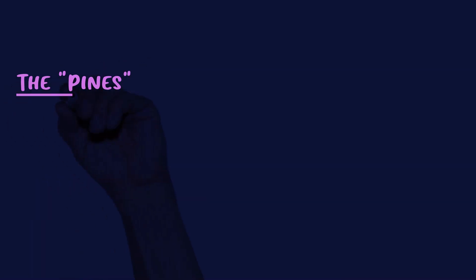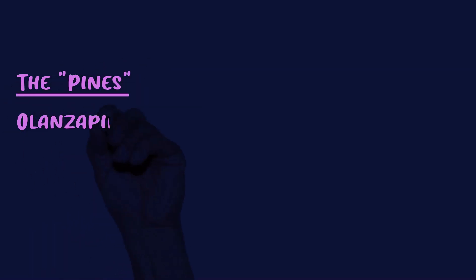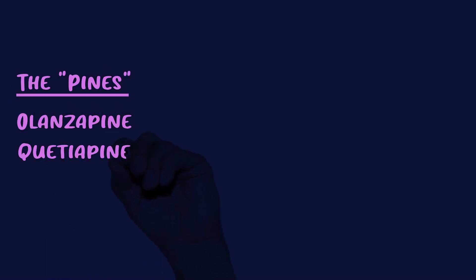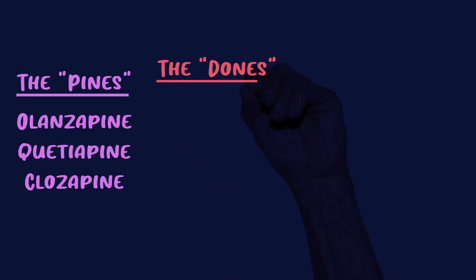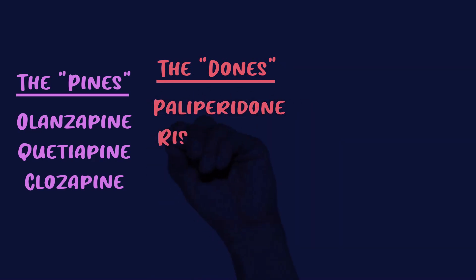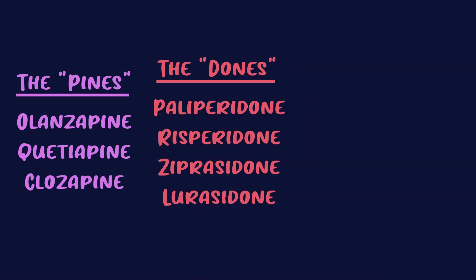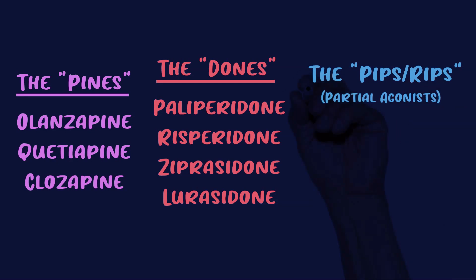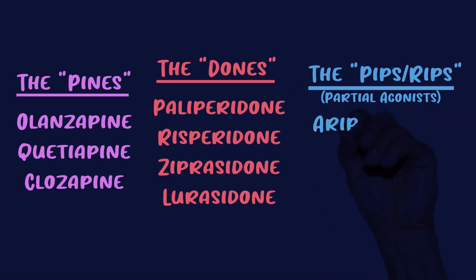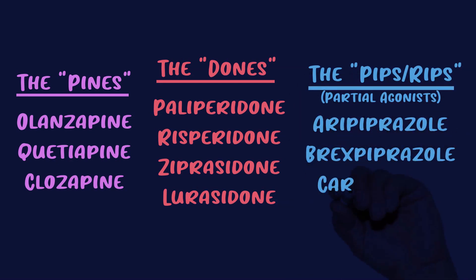So now let's rewrite the names of the drugs. The pines: olanzapine, quetiapine, clozapine. The dones: paliperidone, risperidone, ziprasidone, and lurasidone. And the pips and a rip — these are partial agonists at D2 — and they include aripiprazole, brexpiprazole, and cariprazine.